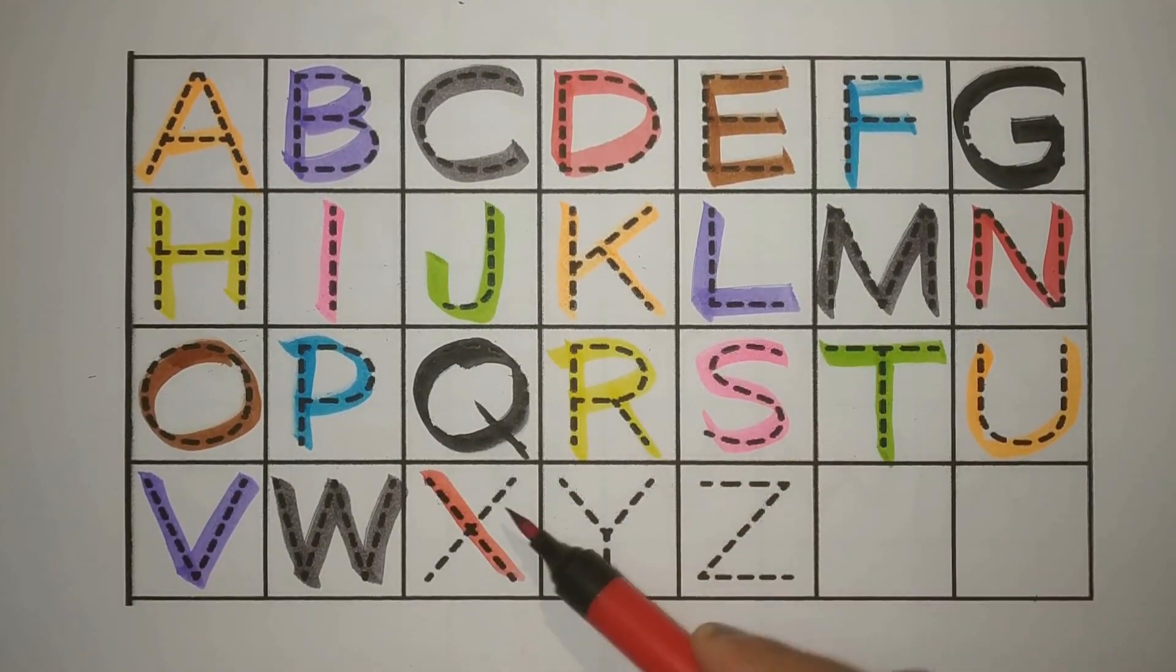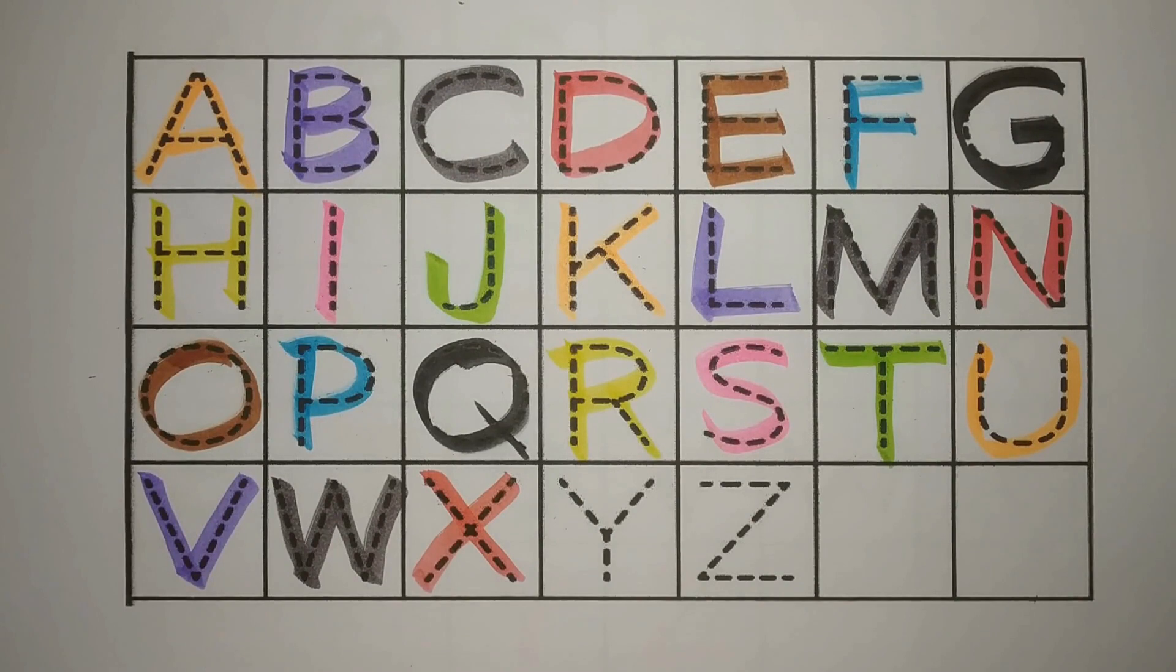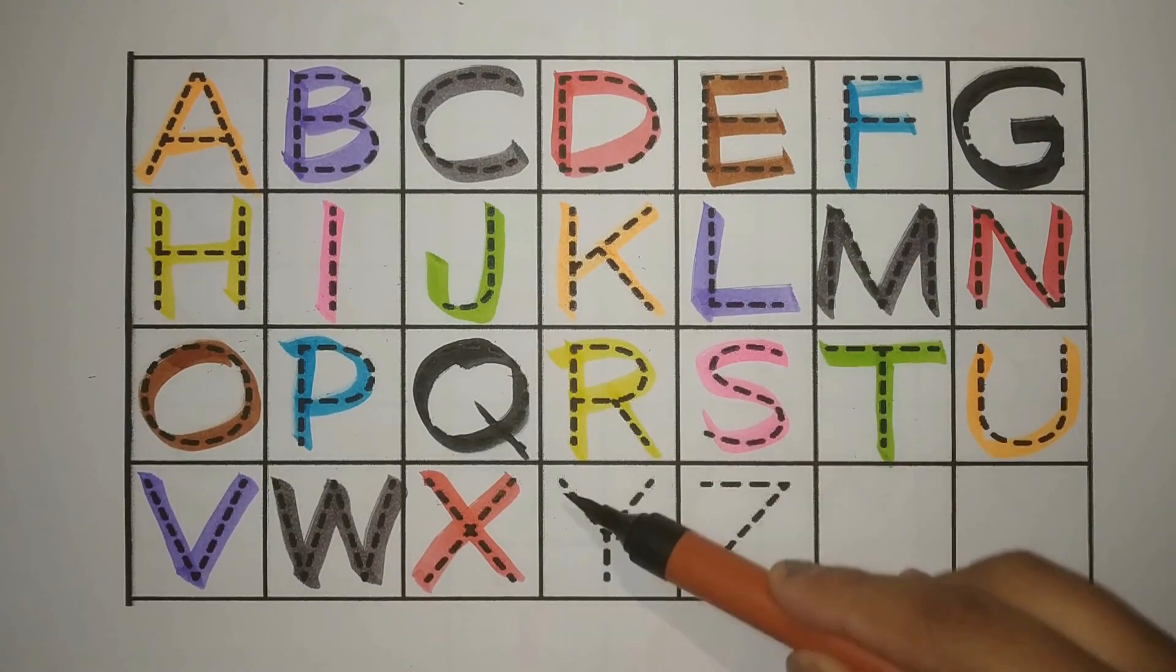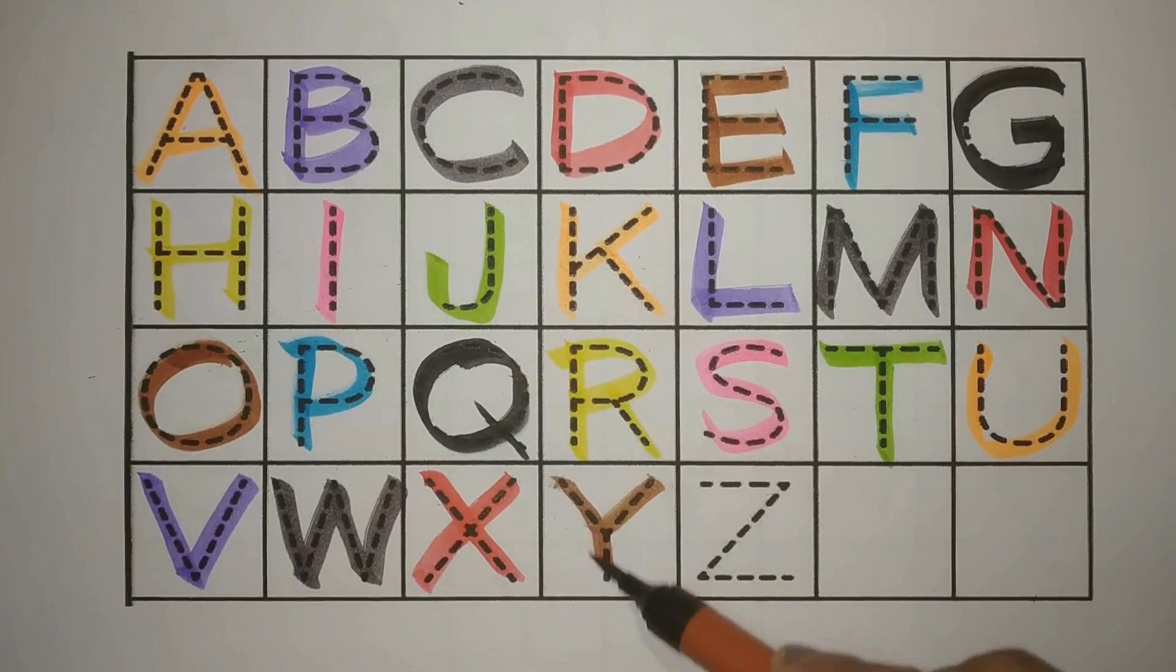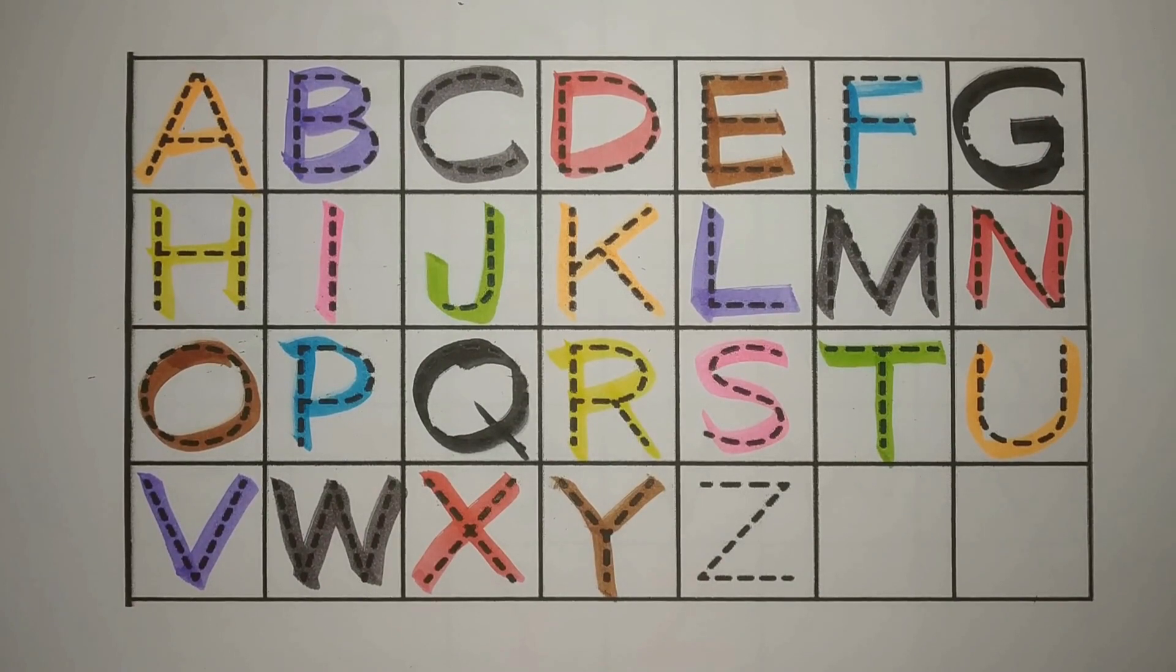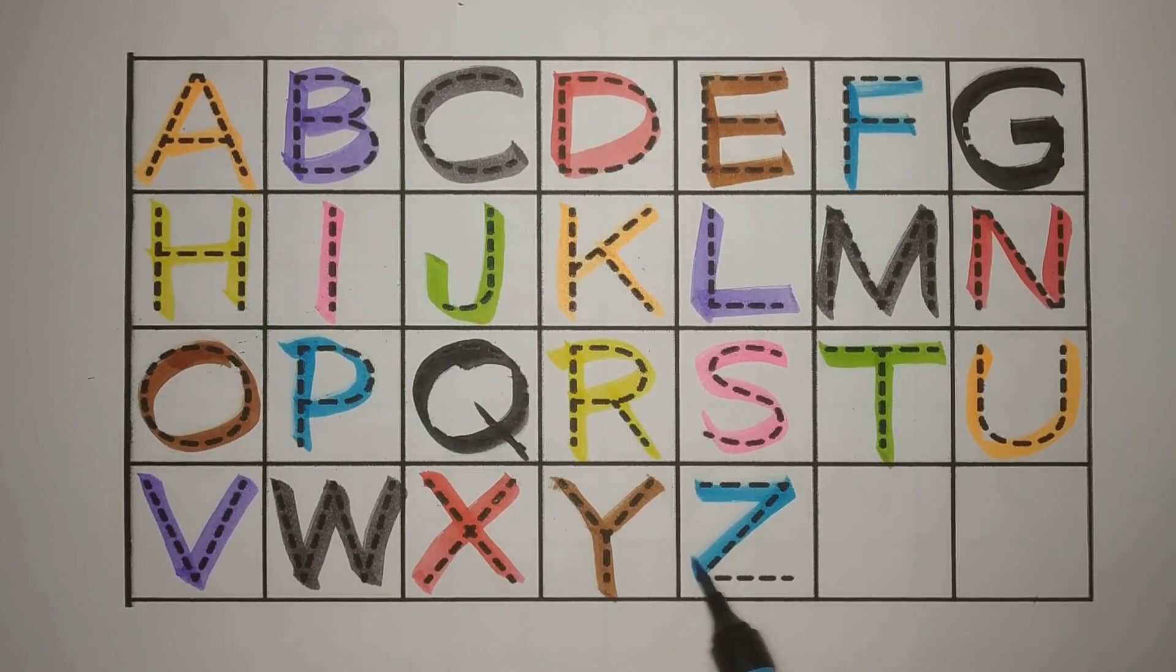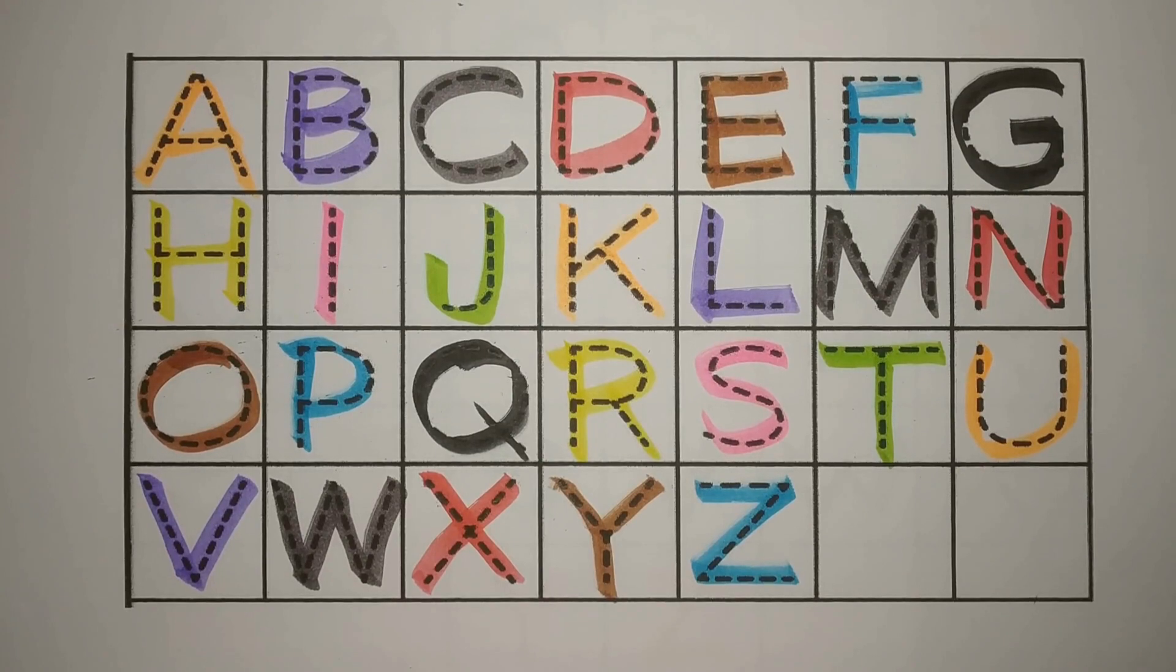X, X for Xylophone. Brown. Y, Y for Yacht. Blue. Z, Z for Zoo. Chiriaghar. Let's revise. Chaloo.